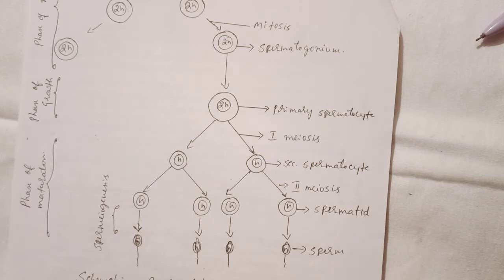Then these secondary spermatocytes undergo second meiosis and give four germ cells. These are called spermatids. And then these four germ cells or spermatids produce four sperms.